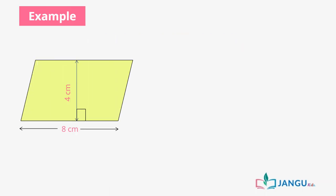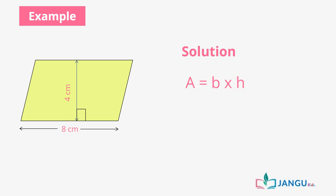Let's practice this by calculating the area of this particular parallelogram. From the image of the parallelogram, you can see that H, which is the height, equals 4 centimeters, while B, which is the base length, equals 8 centimeters. We apply the formula B times H, which is 8 times 4, and that equals 32 centimeters squared.